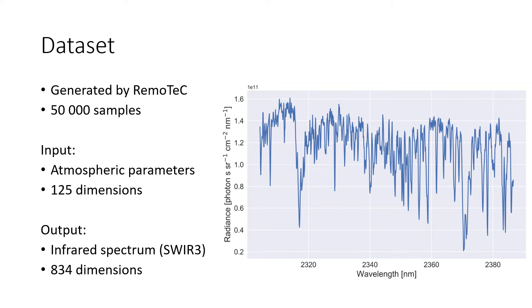On the output, each sample contains a spectrum that belongs to the shortwave infrared band. It is composed of 834 numeric values that correspond to different wavelengths.